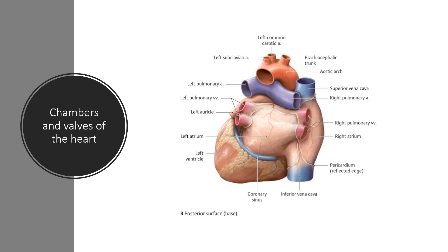The heart consists of four chambers: two atria and two ventricles. The left and right atria are positioned superior to the coronary sulcus. They both have thin walls and consist of expandable extensions called auricles. The left and right ventricles are positioned inferior to the coronary sulcus.